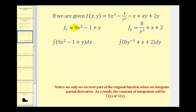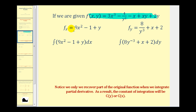Let's see what happens when we take a function, find its first order partials, and then integrate with respect to x as well as with respect to y. So if we're given the following function in two variables, the partial derivative of f with respect to x would be 9x squared, this would be 0, this would be minus 1, this would be y, and this would be 0. So here's the partial of f with respect to x.